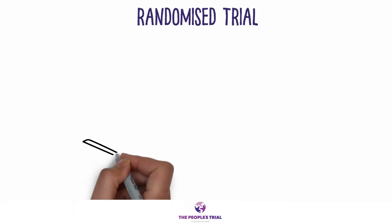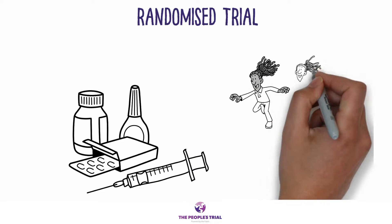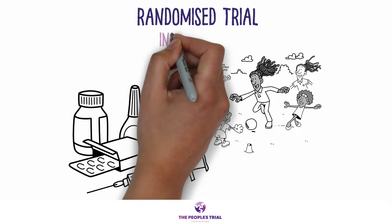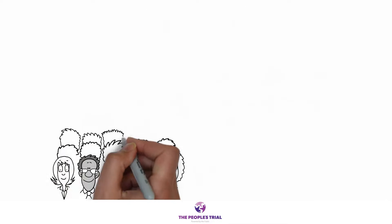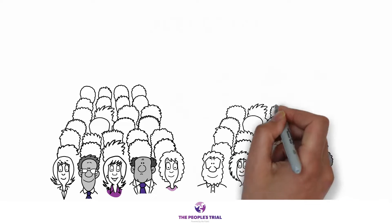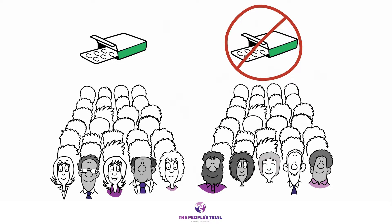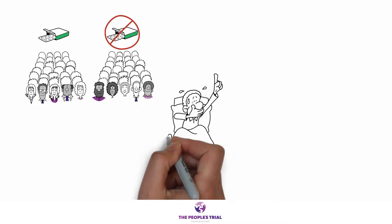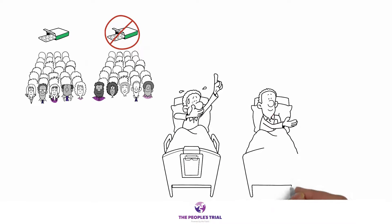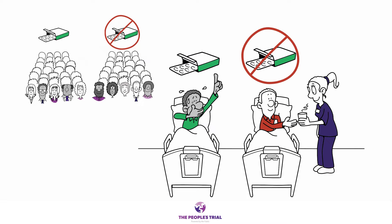A randomized trial is a type of scientific experiment or study conducted to assess the effects of something we call an intervention. Examples of interventions include medicines, vaccines, or public health programs. In randomized trials, people are randomly allocated to two or more separate groups. Some groups receive the intervention and some do not, and then we compare what happens in the groups. We love randomized trials because they are the most rigorous way of determining whether and to what extent an intervention affects a particular outcome.